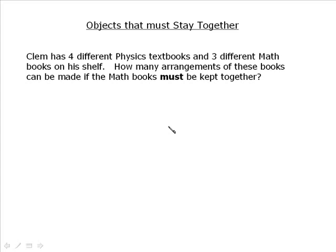Here if you have, Clem has four different physics textbooks and three different math books on his shelf. How many arrangements of these books can be made if the math books must be kept together? Now, without this restriction on it, it would be a fairly routine seven factorial question. But it's not, because for whatever reasons, Clem wants these math books to be kept together. To Armstrong your way through this, it would be a very difficult task.